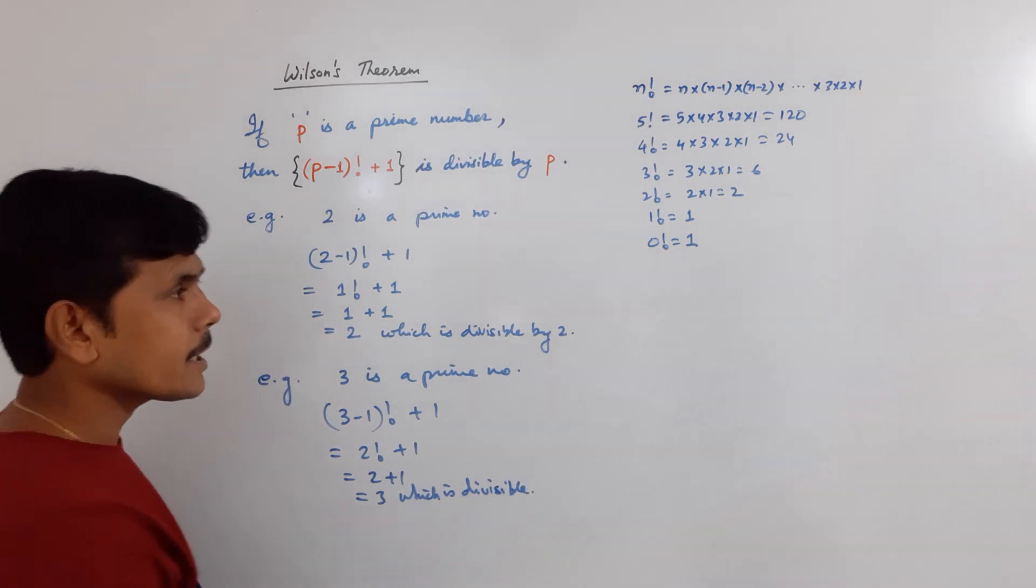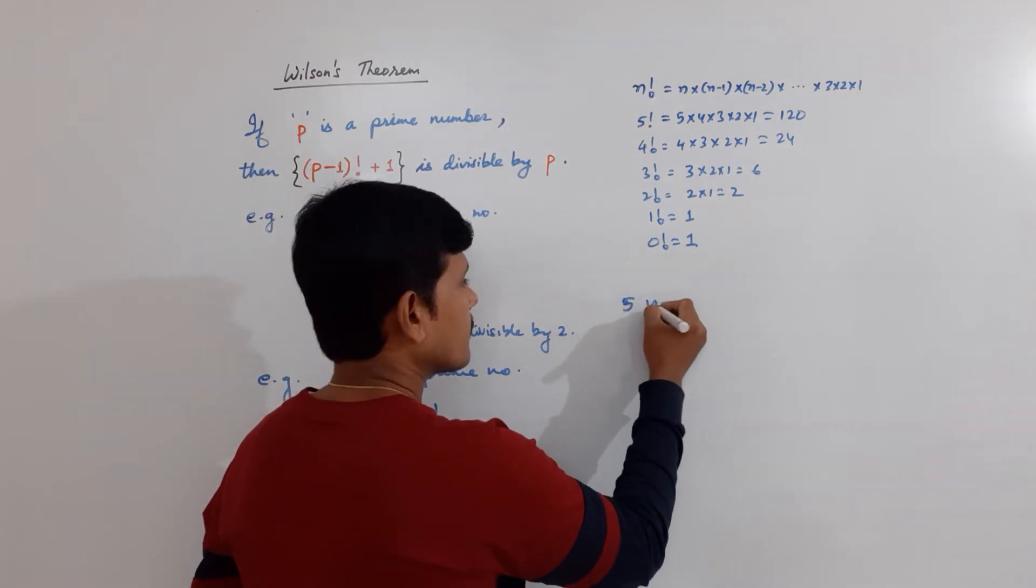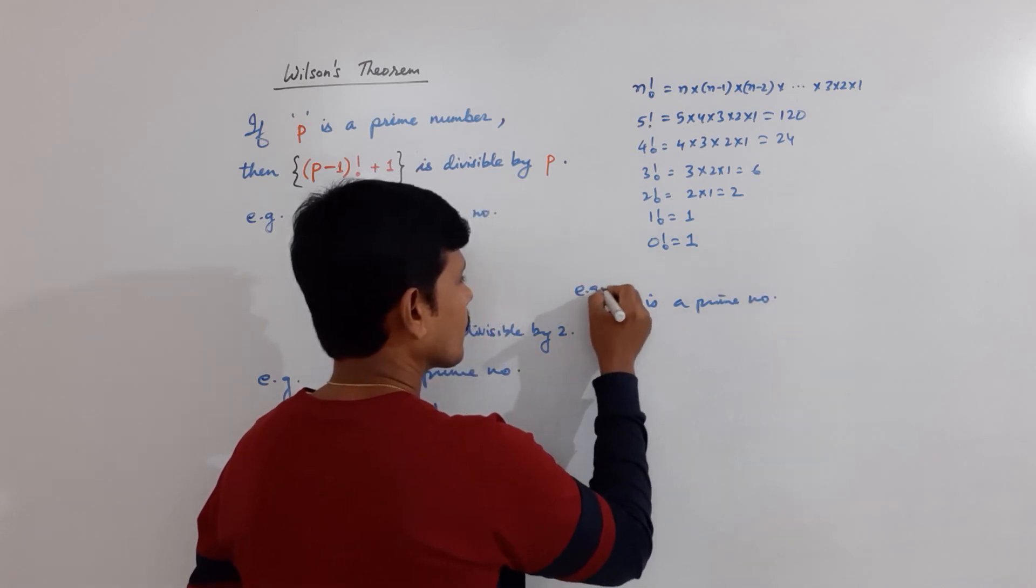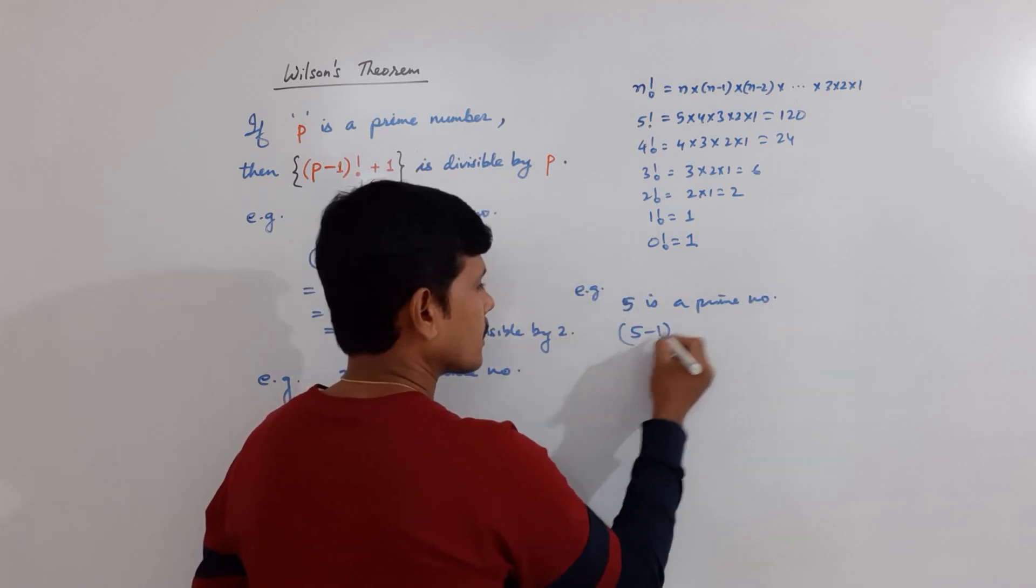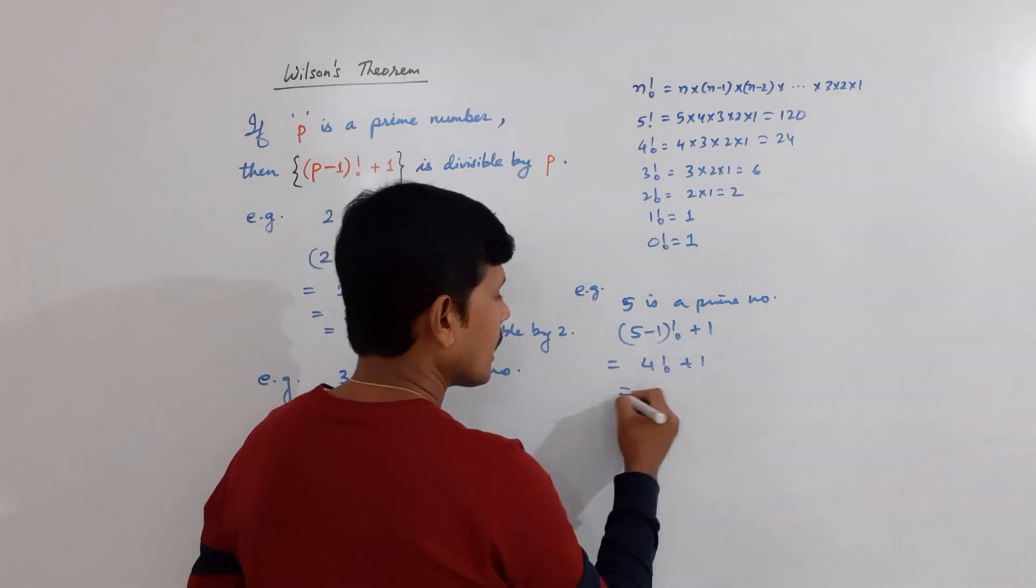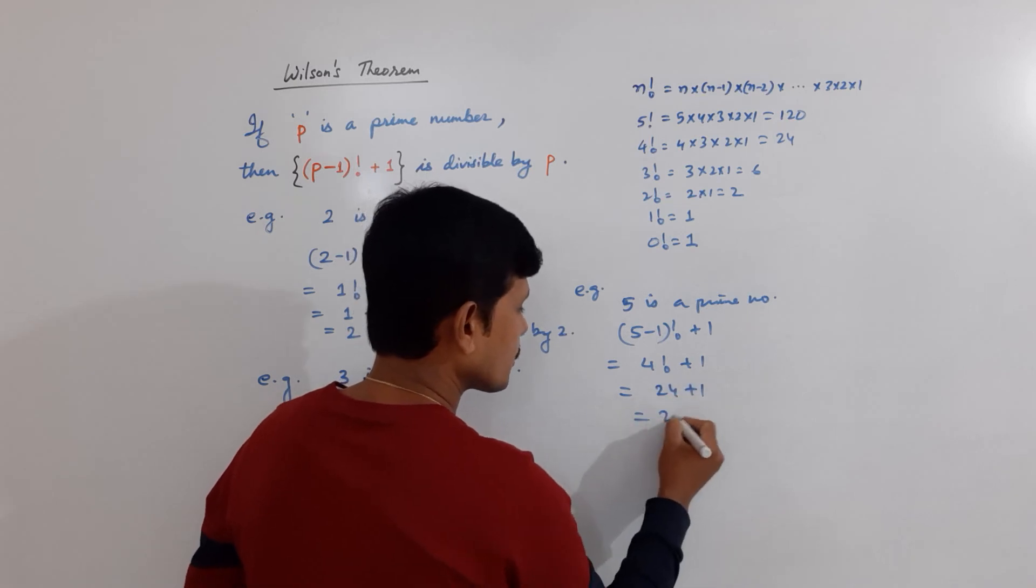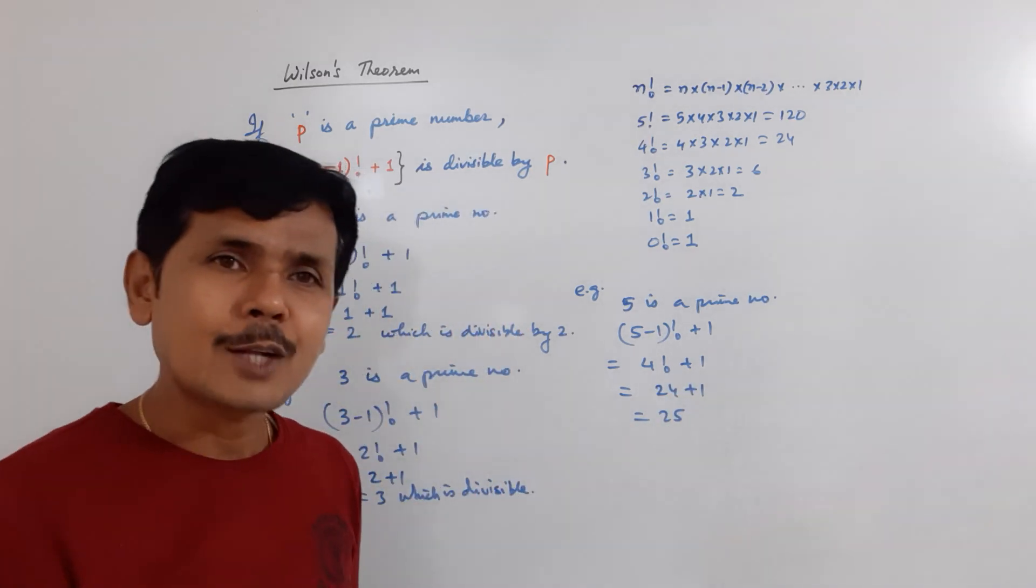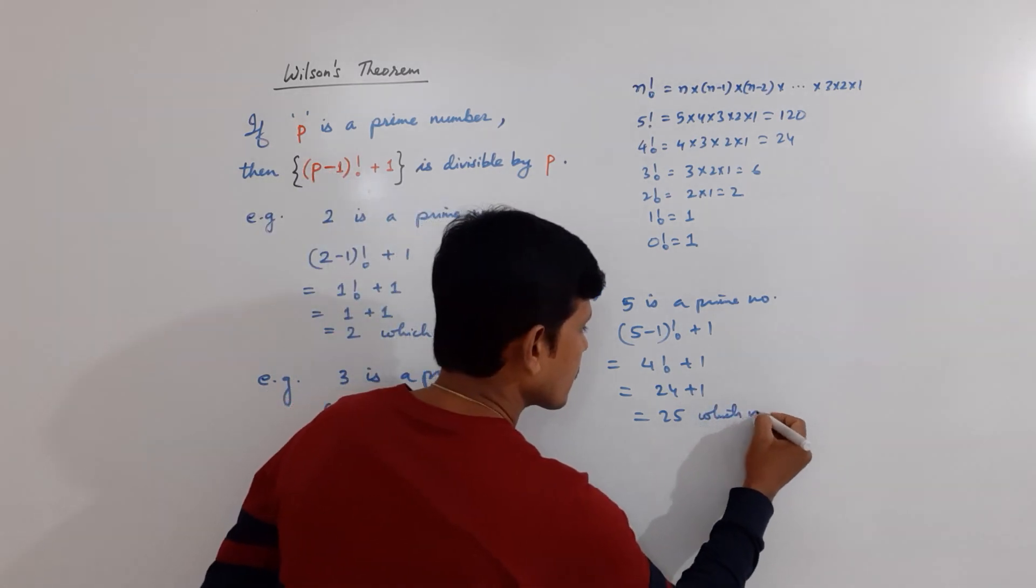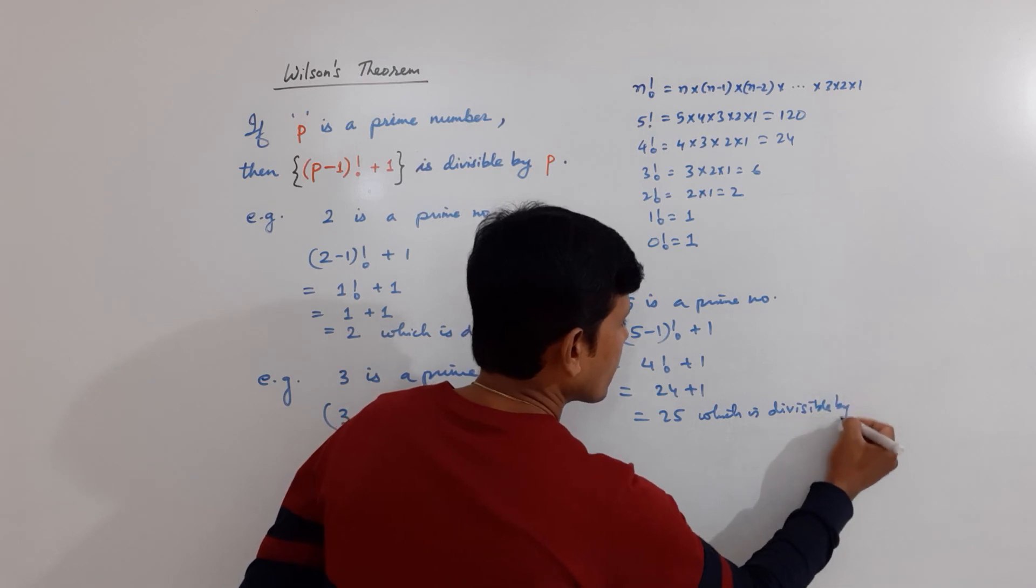Suppose I take for 5. 5 is the prime number. 5 minus 1 factorial plus 1. 5 minus 1 means 4 factorial plus 1. And 4 factorial is 24 plus 1, which is equal to 25, and 25 is divisible by 5, which is divisible by 5.